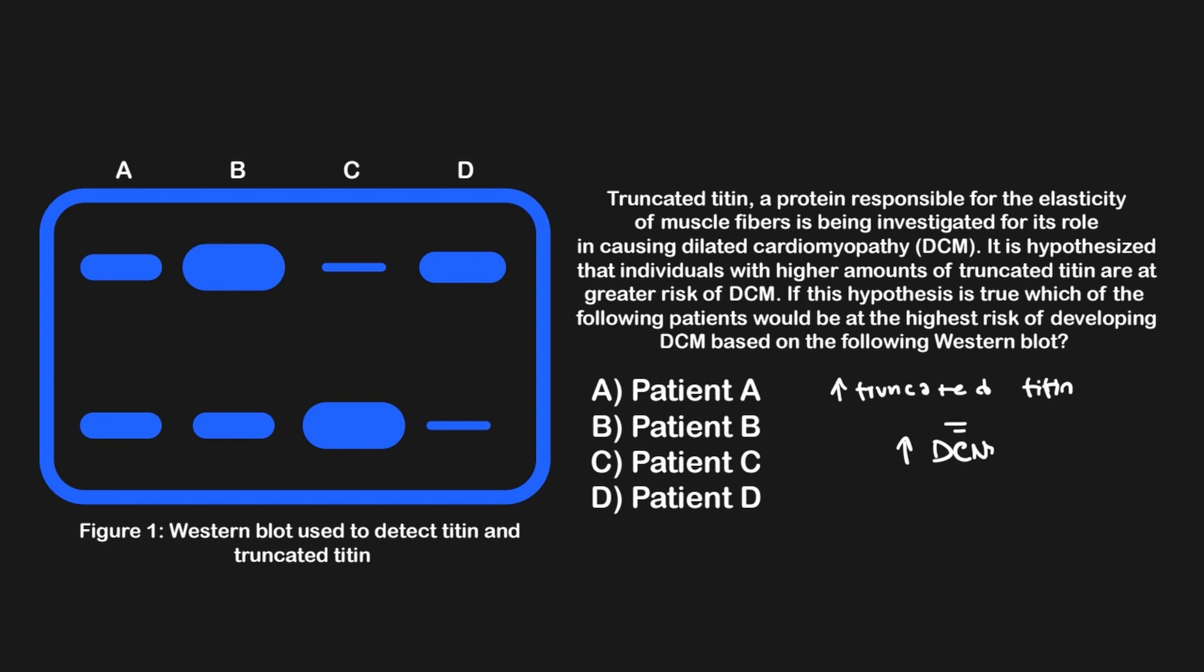To do this, we will need to interpret the blot we have been given, which according to the caption, shows both truncated and normal versions of titin. First, let's figure out which part of this blot shows truncated titin. Since truncated titin would be shorter than regular titin, and thereby smaller, we should expect it to show up further down in the blot, since smaller molecules will end up traveling further in the gel prior to being transferred over to the blotting paper.